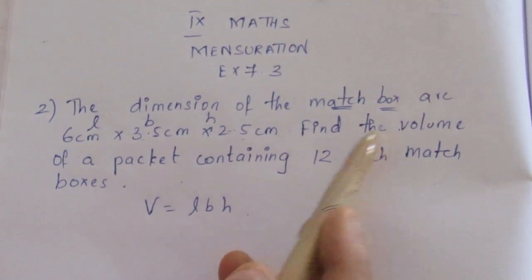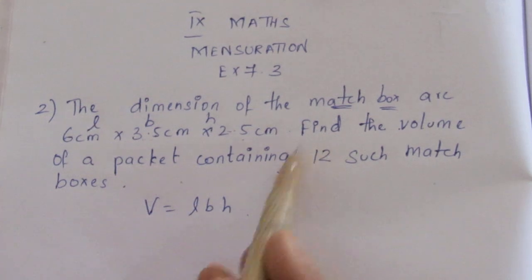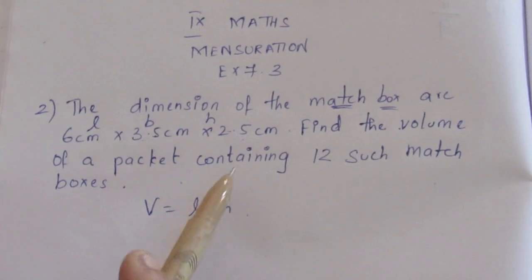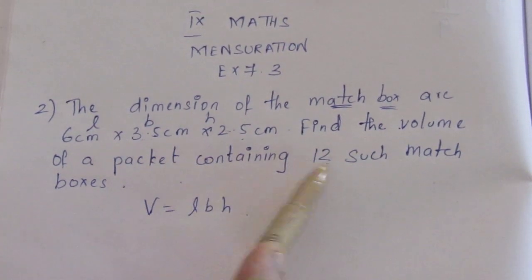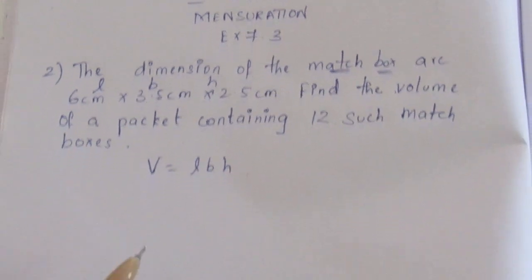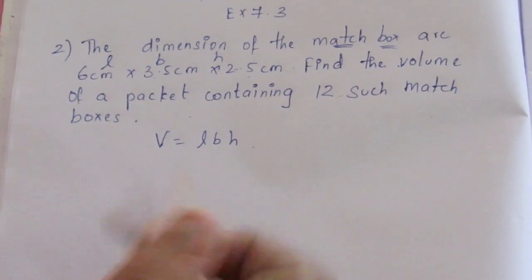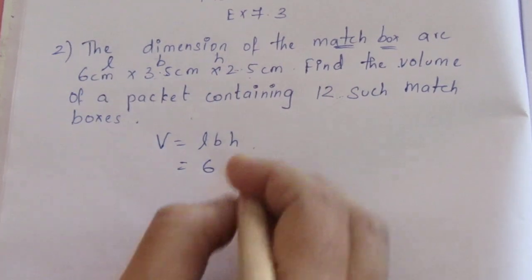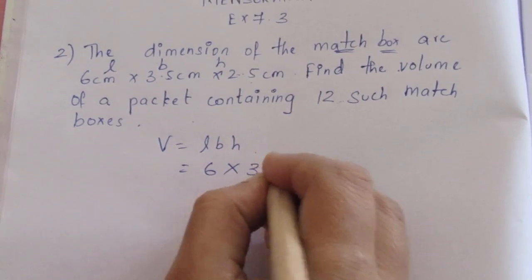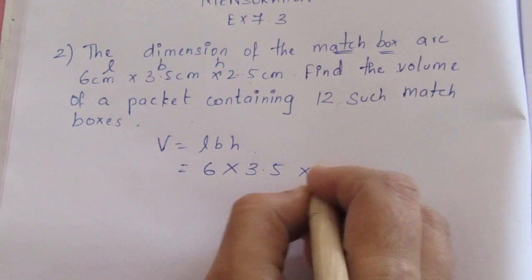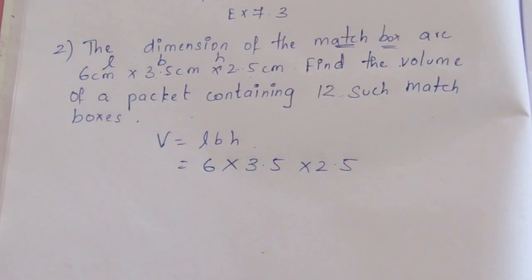The volume of a matchbox — there are 12 matchboxes, so the volume of one matchbox will be the same. This is a very easy sum. Let's multiply: 6 × 3.5 × 2.5.